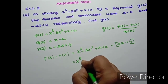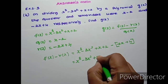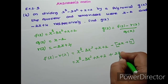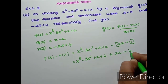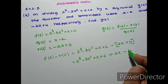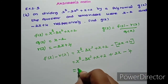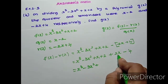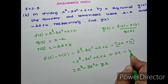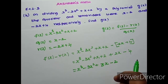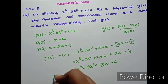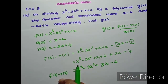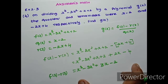We compute f of x minus r of x: x cube minus 3x square plus x plus 2, minus into minus gives plus 2x, and minus into minus gives minus 4. This simplifies to x cube minus 3x square plus 3x minus 2. This is f of x minus r of x, which we now divide by q of x.